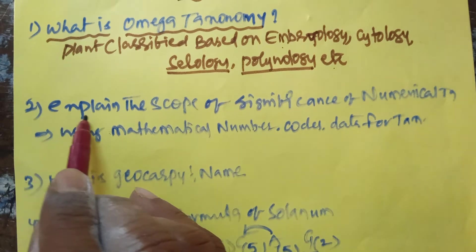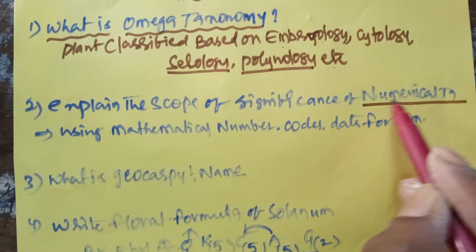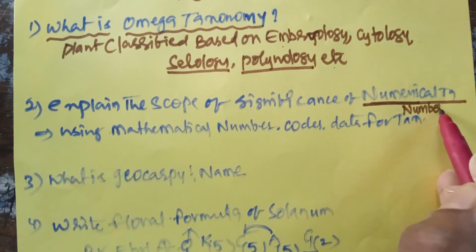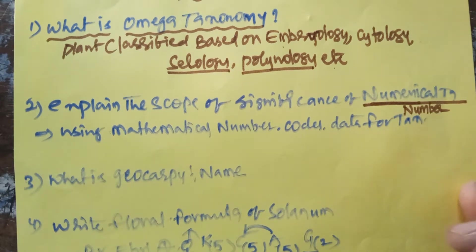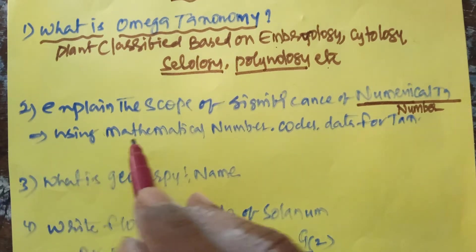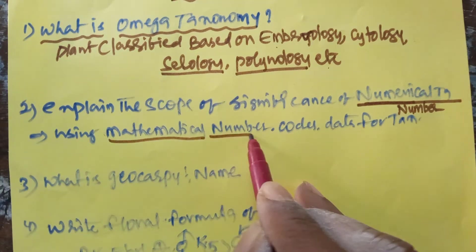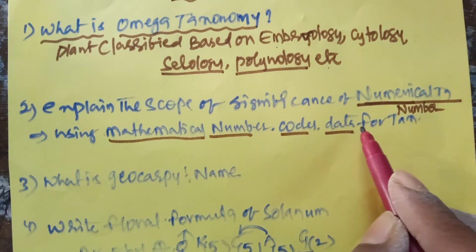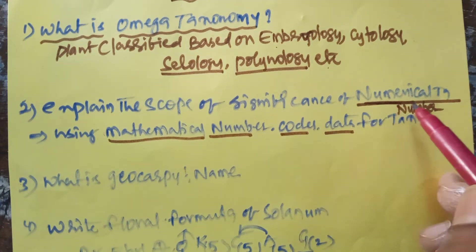Now come to the second question: explain the scope and significance of numerical taxonomy. Numerical means 'number'. Based on number, if we classify plants, that is called as numerical taxonomy. In numerical taxonomy, different types of mathematical numbers, codes, and data of different plants are used as accounts for classification. That classification is called as numerical classification.